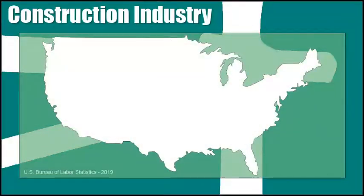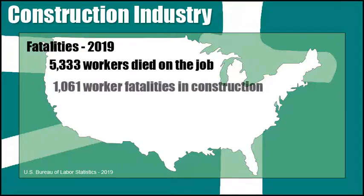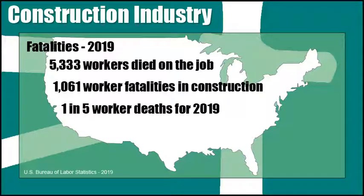The U.S. Bureau of Labor Statistics released its annual National Census of Fatal Occupational Injuries report for 2019, and reported that the private construction industry had 1,061 fatal injuries for the year. That's up five percent from 2018, and the sector's highest number of worker deaths since 2007. A total of 28 states had more fatal injuries in 2019 than 2018, while 21 states had fewer.